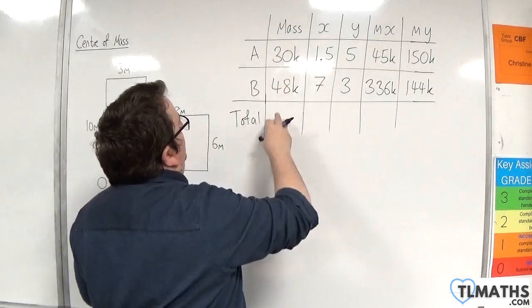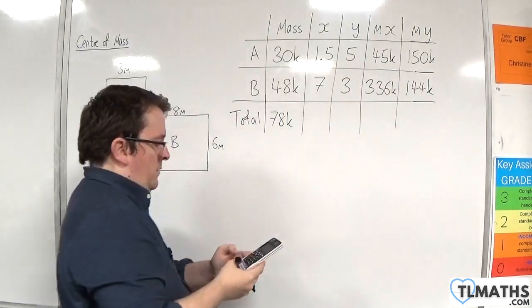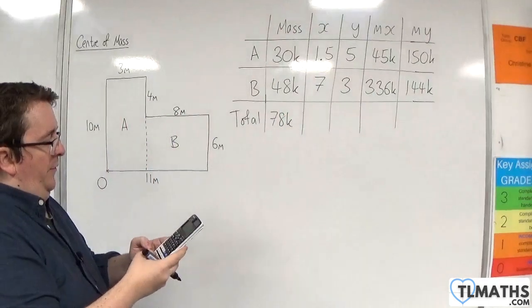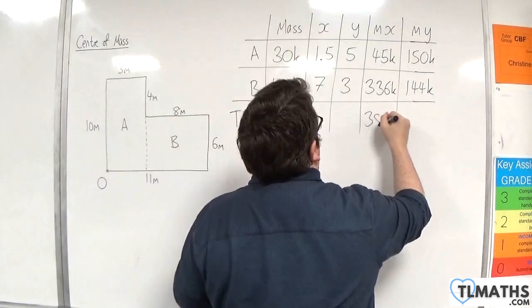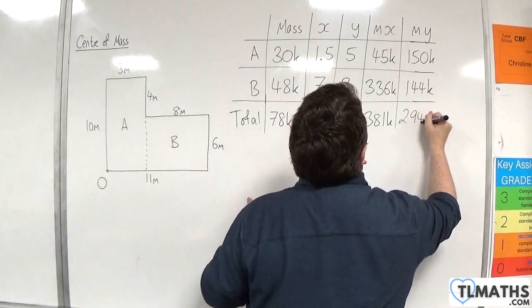So the total mass here is 78K. The 45 plus 336K. The 45 plus 336 is 381K. And then 294K.